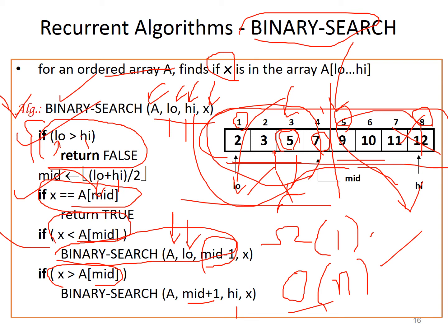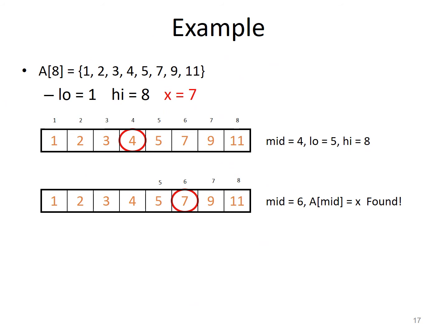This is a recursive algorithm to search an element by decreasing the problem size each time. Now let's look at how to arrive at the recurrence relation for binary search. You have a problem of size n. Each step takes constant time for comparisons. Then you make a recursive call with input size n/2. So the recurrence is T(n) = c + T(n/2), with base case T(1) = O(1).